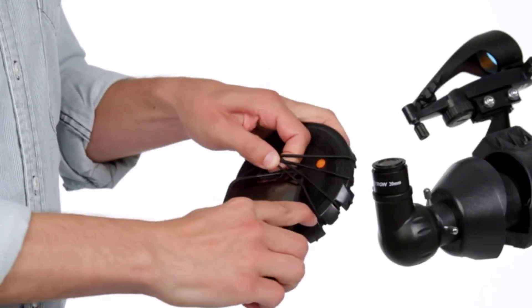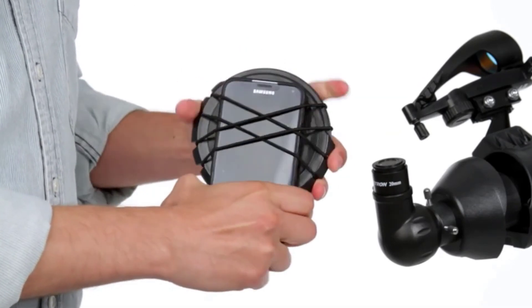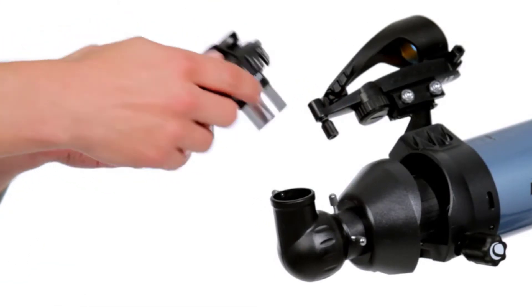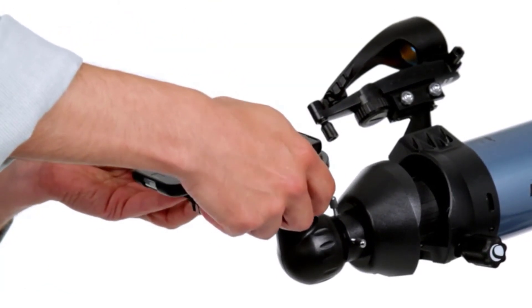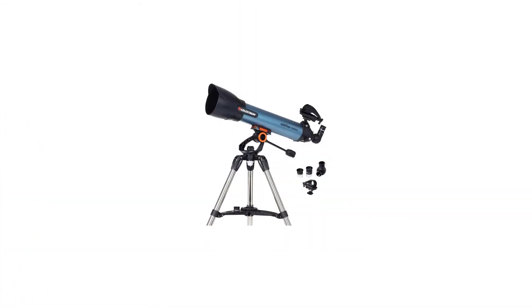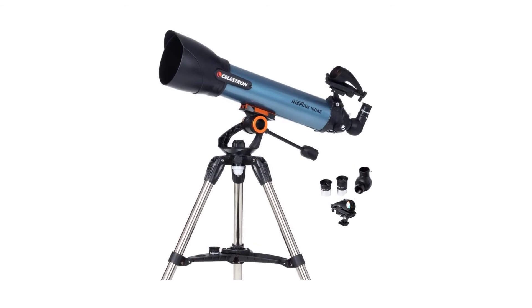Two eyepieces are included, a 20mm and a 10mm Kellner. There is also a Star Pointer Pro FinderScope to help you aim your tool. The Focus Micrometer uses a numbered scale that shows you exactly where the focuser is positioned. This helps you quickly return to any specific point you like if you drift away from it or look at something else.